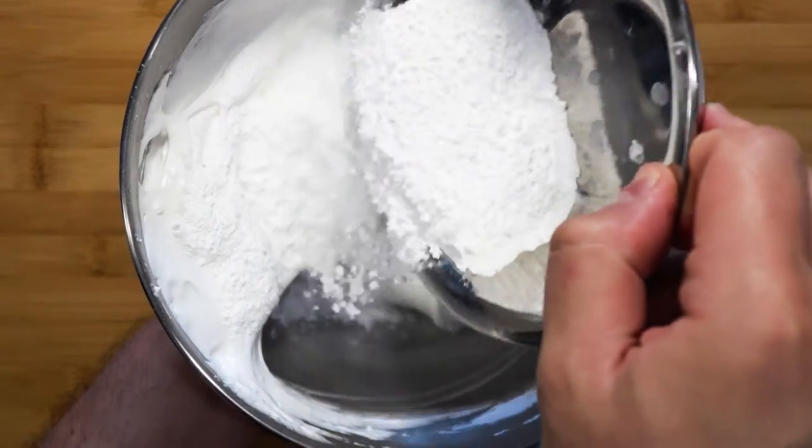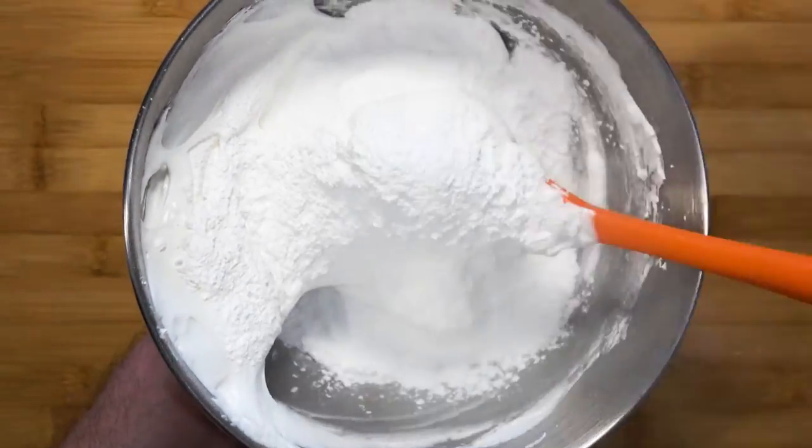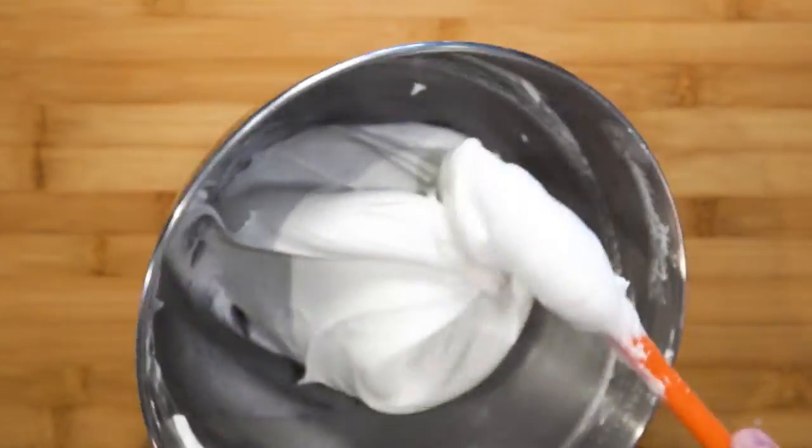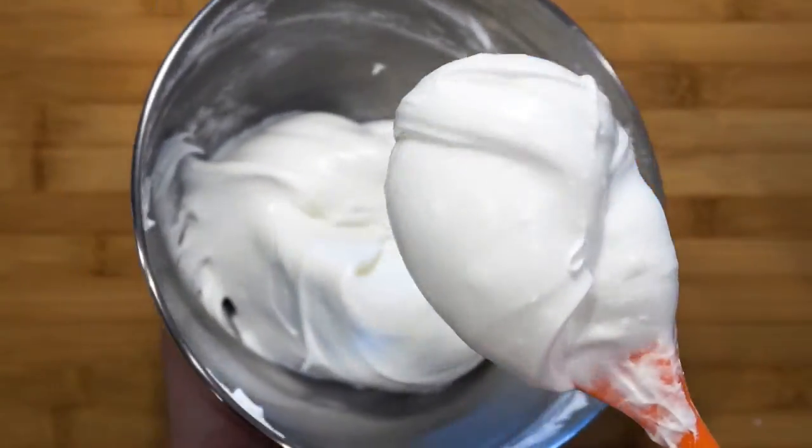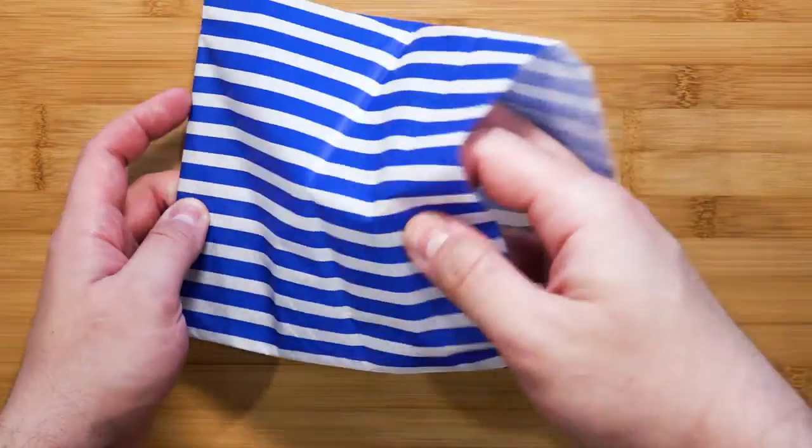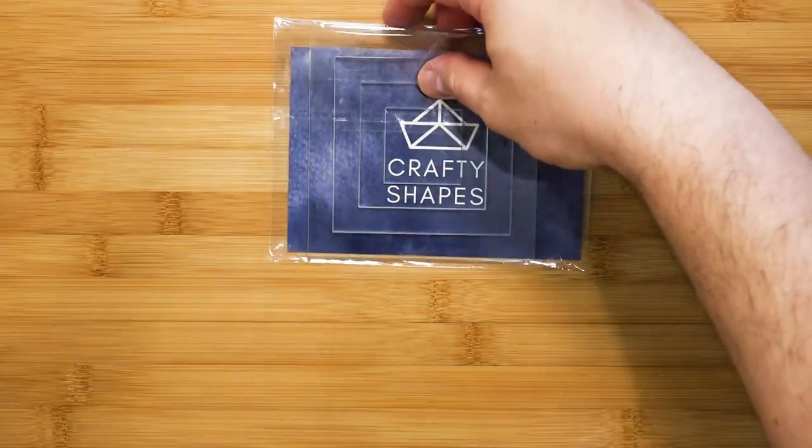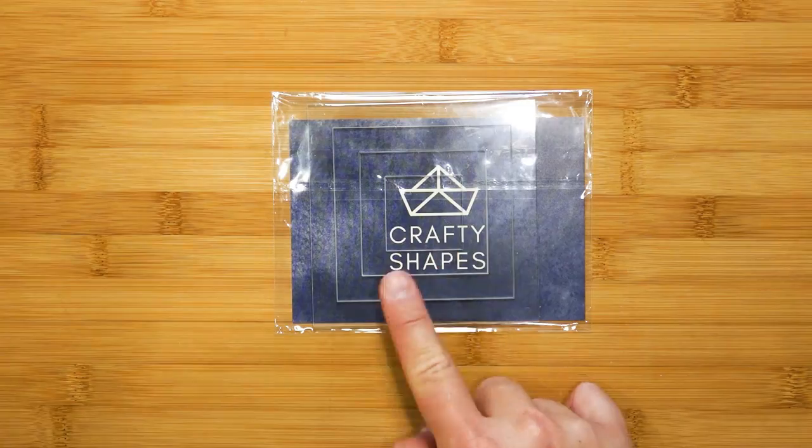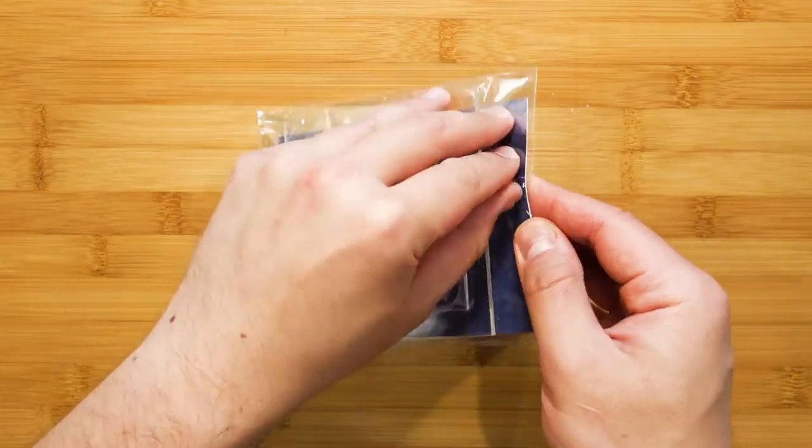You will end up with a very stable and glossy meringue. Once you have done that, leave that to one side. In the meantime, let me show you something. What I have over here is some square patchwork templates that are laser cut from acrylic.